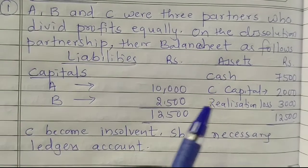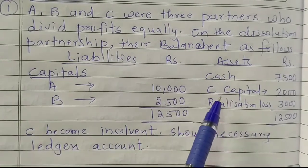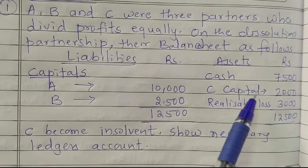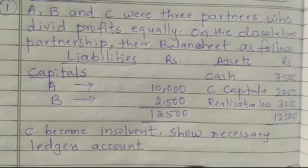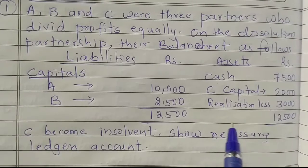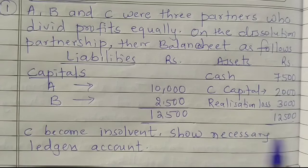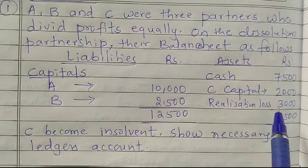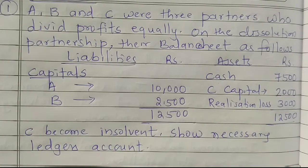Before solving the problem, it is clear that the capital of C is on the debit side, which means he is insolvent. The following steps are taken into consideration to close the books. The first step is that the realization account is prepared first. In this case, there is no need to prepare the realization account because asset realization details and liabilities are not given. The direct realization loss is given, which is 3,000 in this case.